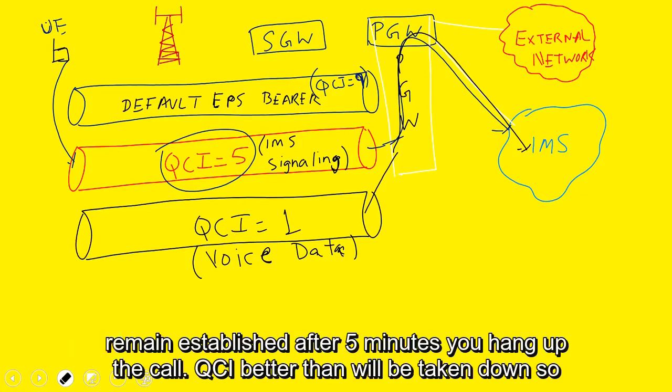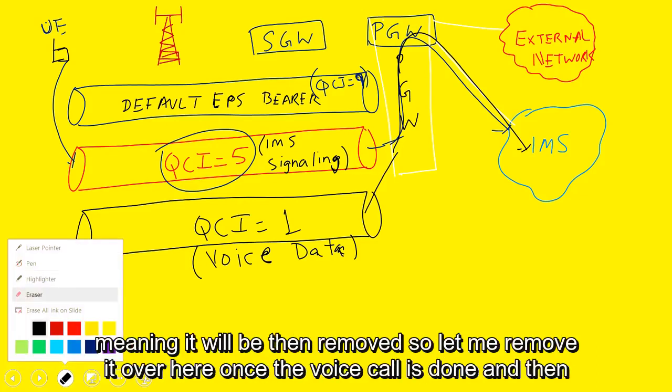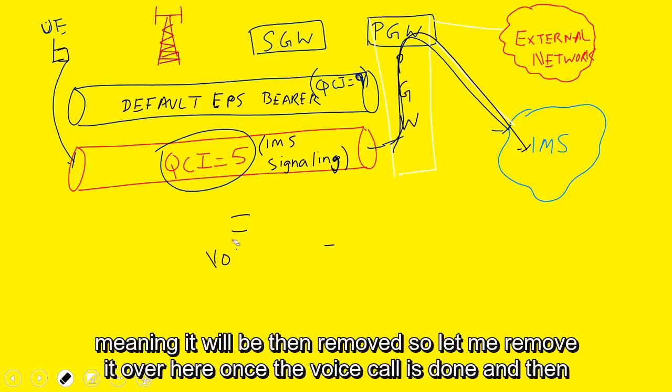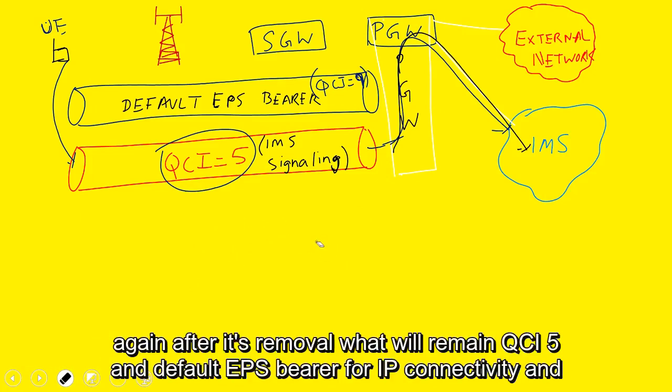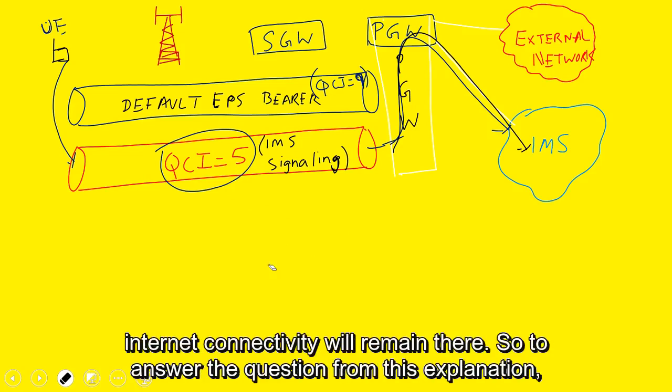QCI1 bearer then will be taken down. So meaning it will be removed. So let me remove it over here once the voice call is done. And then again, after it's removed, what will remain? QCI5 and default EPS bearer for IP connectivity and internet connectivity will remain there.